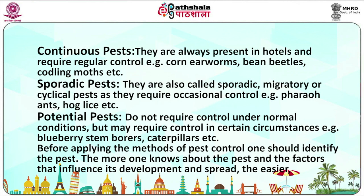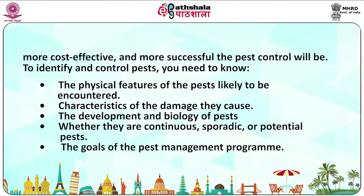Before applying the methods of pest control, one should identify the pest. The more one knows about the pest and the factors that influence its development and spread, the easier, more cost-effective, and more successful the pest control will be. To identify the pests, you need to know the physical features of pests likely to be encountered, the characteristics and the damage they cause, and the development and biology of the pests — whether they are continuous, sporadic or potential pests.